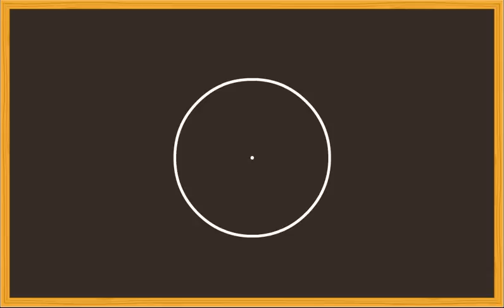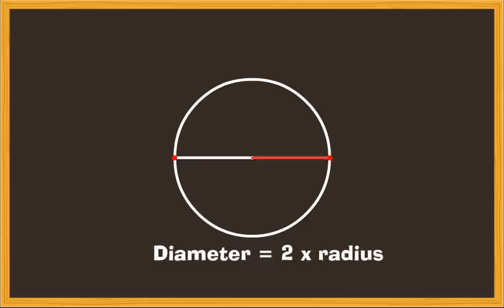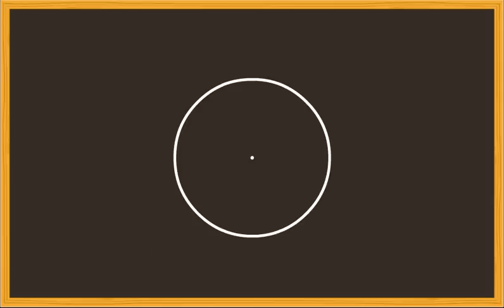A line segment that joins two points on a circle is called a chord. As you can see, a chord can have many different lengths. Can you guess which is the longest chord? It is the one which passes through the center. A chord which passes through the center of the circle is called a diameter, or we can say that the diameter is two radii put together.